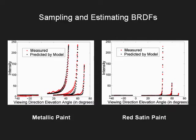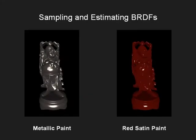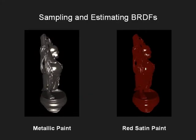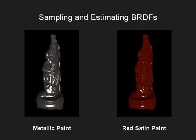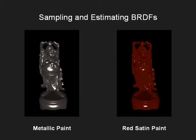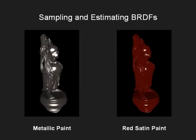The Oren-Nayar and Torrance-Sparrow models were used to respectively characterize the diffuse and specular components of the measured radiances. The fits for the red channel are shown here, and similar good fits were obtained for the other channels. We can now render objects with the computed BRDFs. Thus, from a single image, we can recover the appearance of a material.